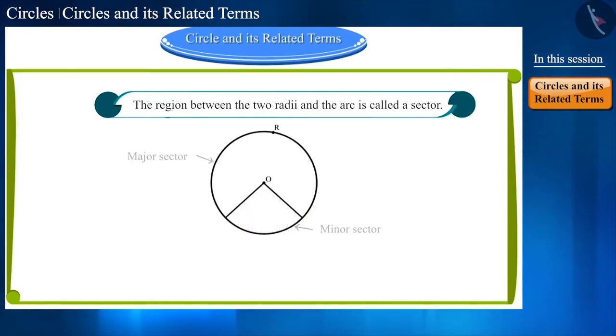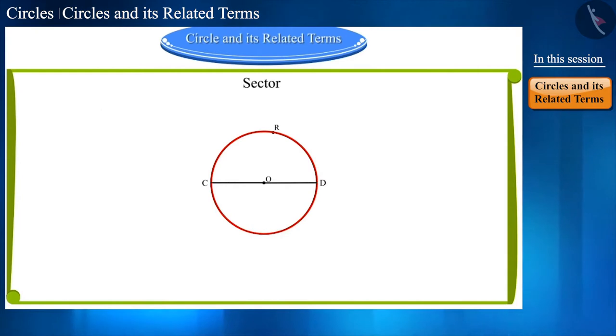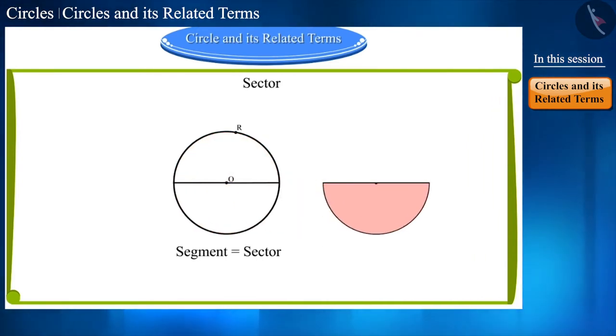But when both these arcs become equal, then both the segments and both the sectors become equal. Now what will we call this? Yes friends, this is a semicircle and this region is called the semicircular region.